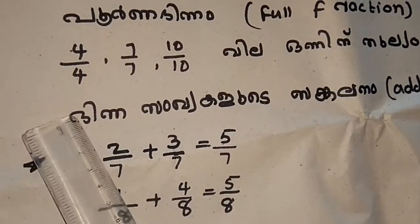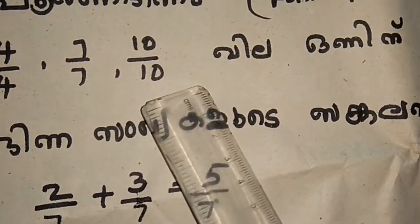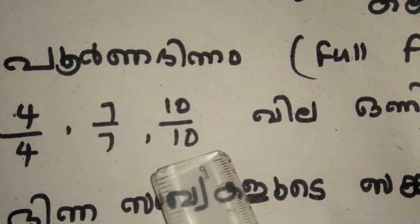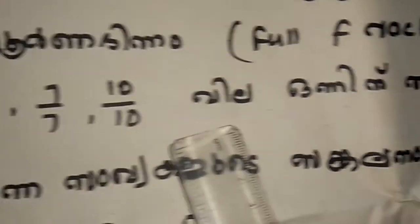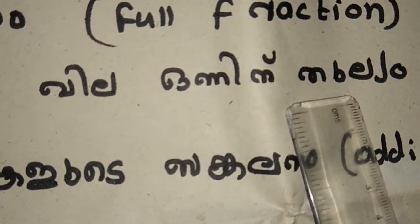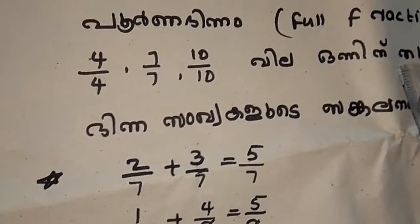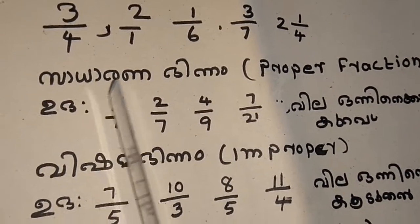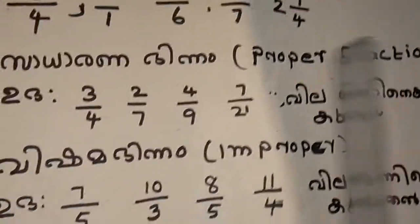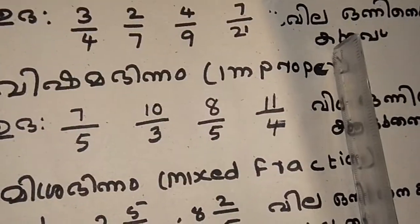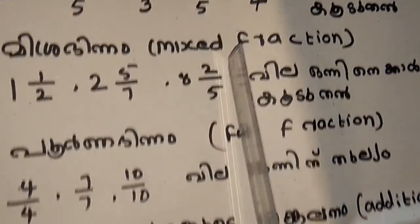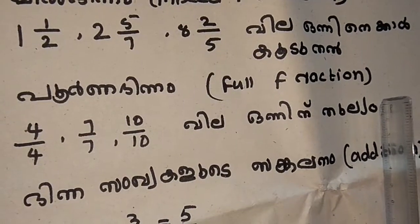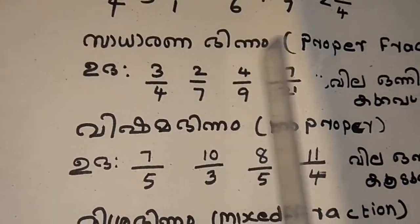4x4, 2x8, 10x10. The full fraction is 4x4, 4x4, 1x10. Vishama Binyaam Adho Improper Fraction. Misra Binyaam Adho Mixed Fraction. Poorna Binyaam Adho Full Fraction.